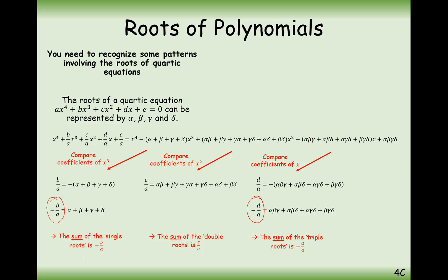We've got the sum of the singles, sum of the doubles, sum of the triples, and the last one is all four roots multiplied together equals e over a. Notice: negative for b over a, positive for c over a, negative for d over a, and positive for e over a.